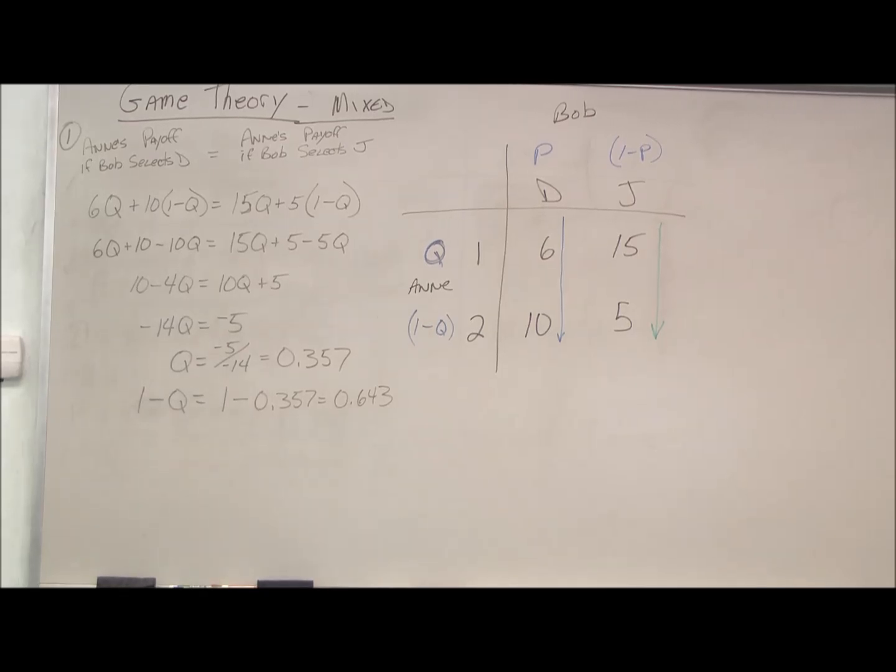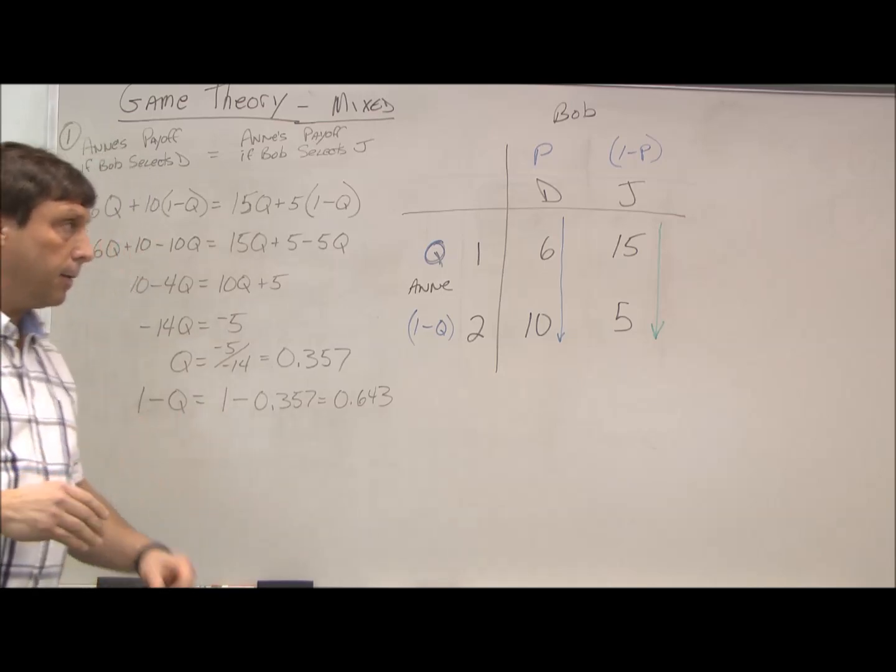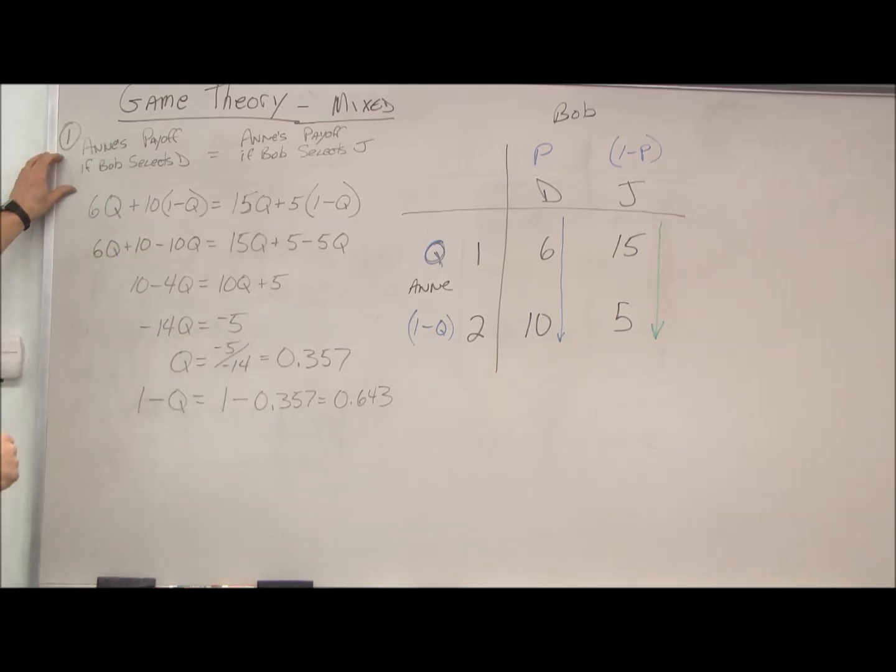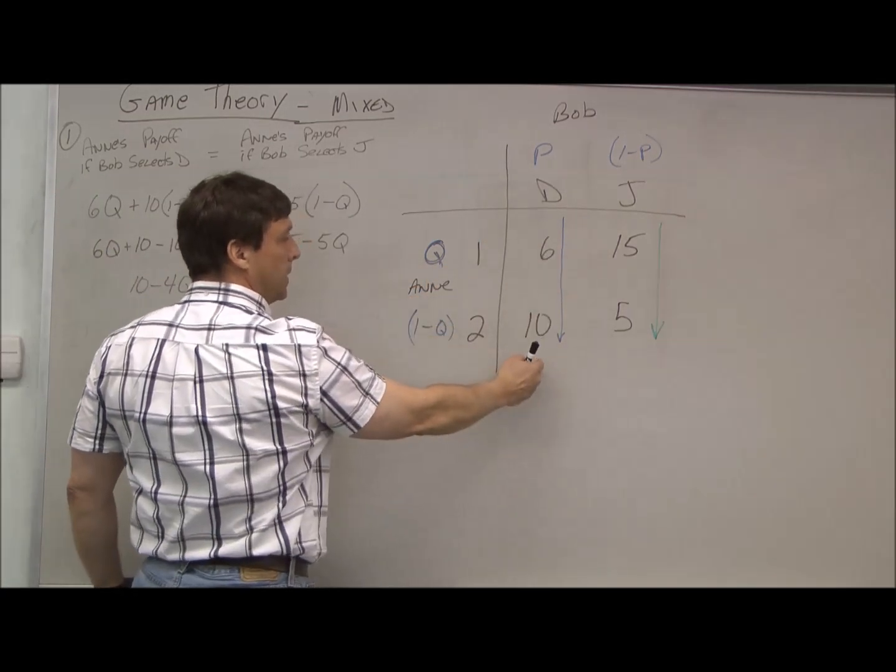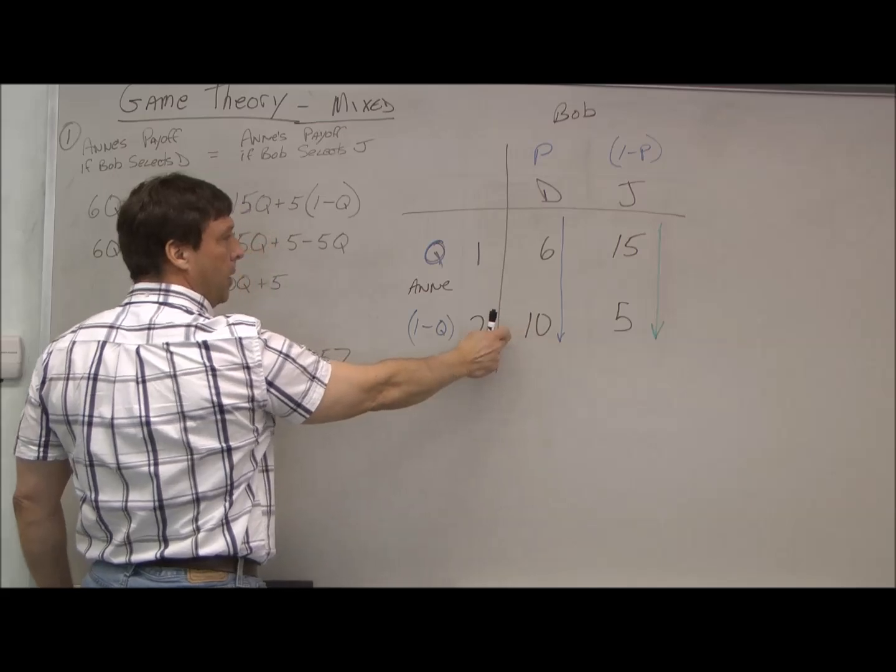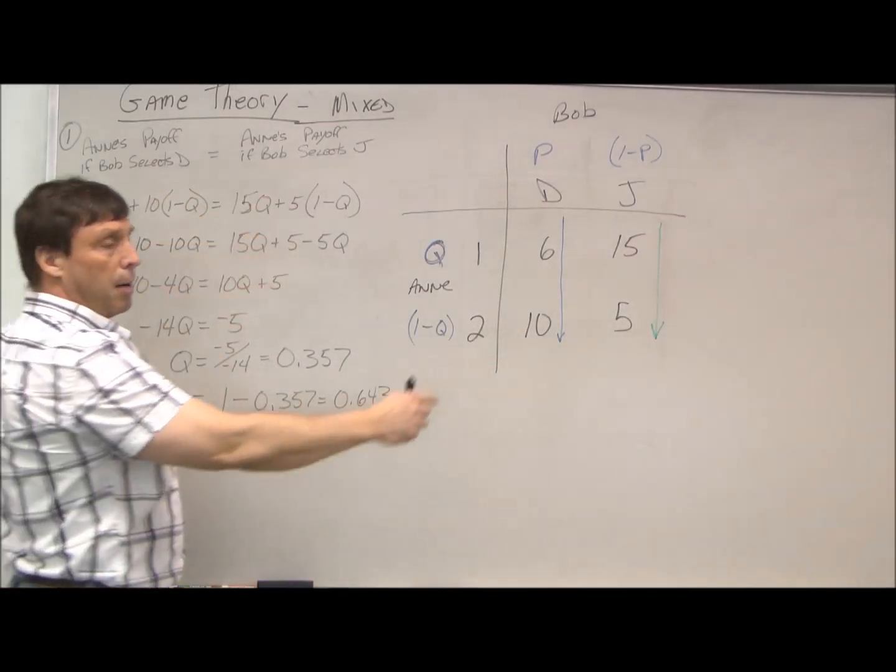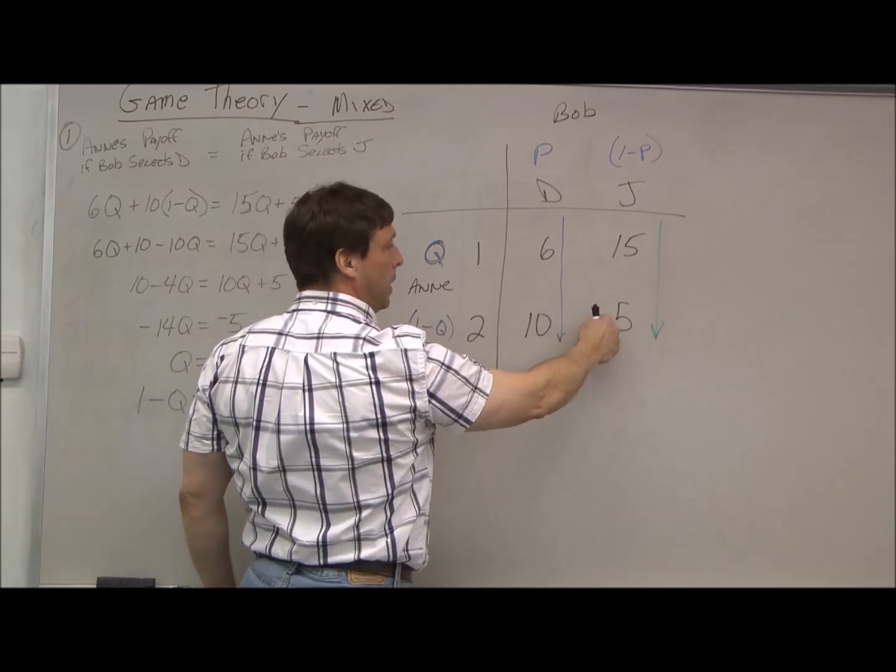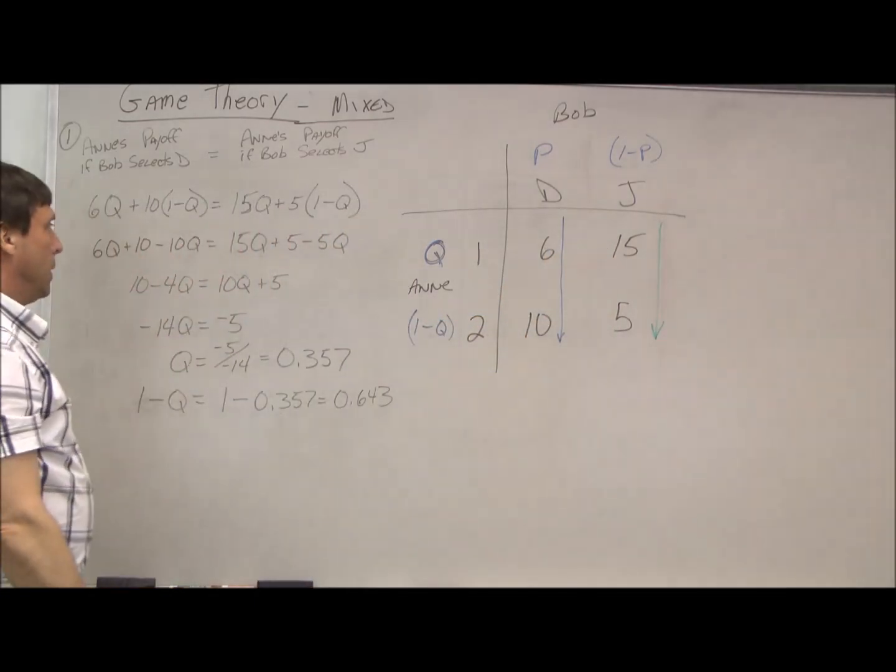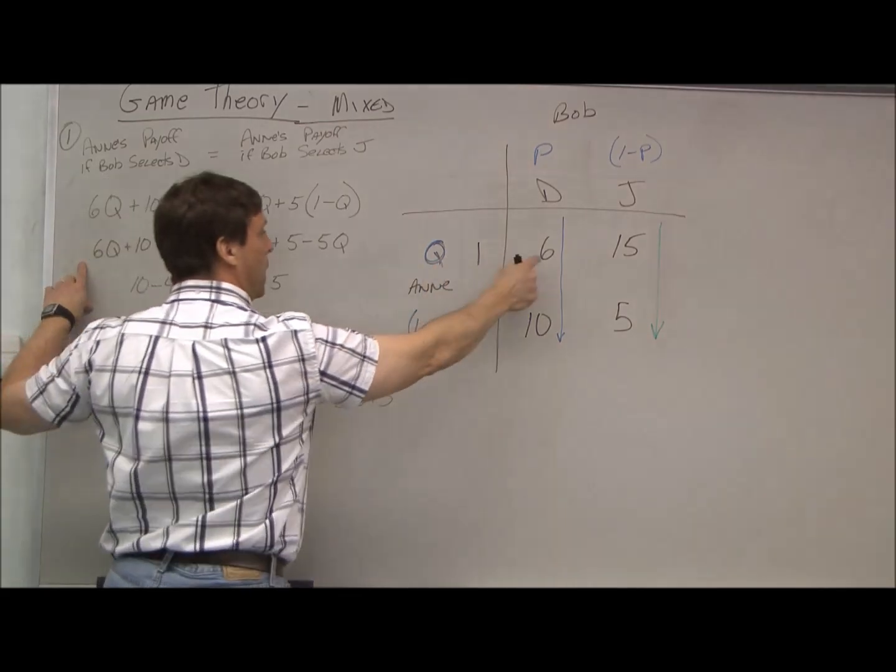Now we find Annie's probabilities. It's set up as Annie's payoff if Bob selects D—in other words, if Bob selects D, these are Annie's two payoffs here—equals Annie's payoff if Bob selects J, these are the two payoffs.